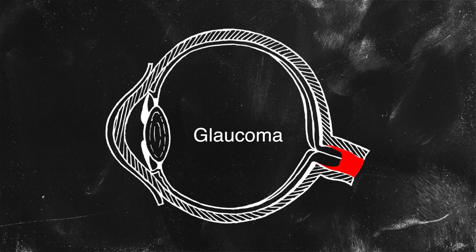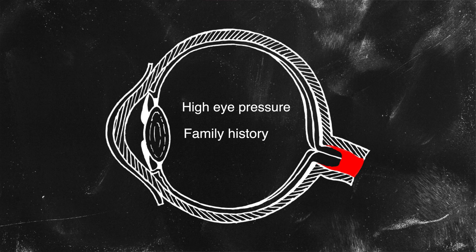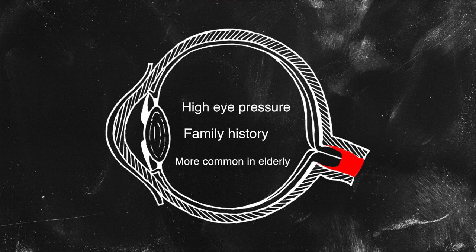When the optic nerve degenerates, we call that glaucoma. The exact mechanism of how it happens is still up for debate. But one thing we know for sure is that people with high intraocular pressures and a family history of glaucoma are more likely to get it themselves, and it is more common in the elderly, although it can happen at any age.